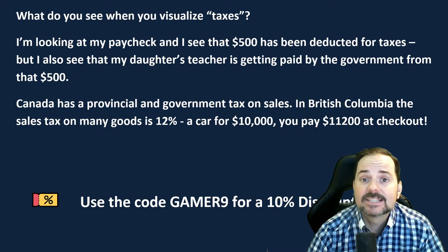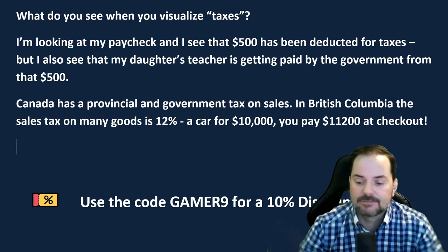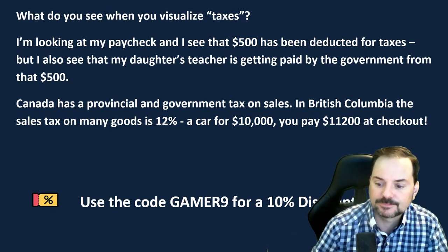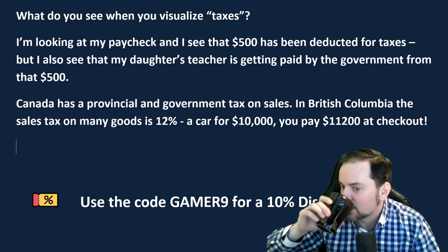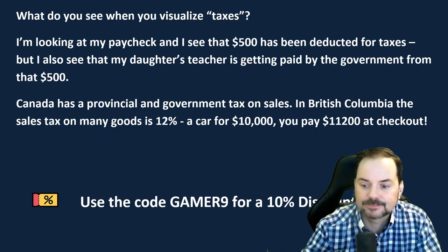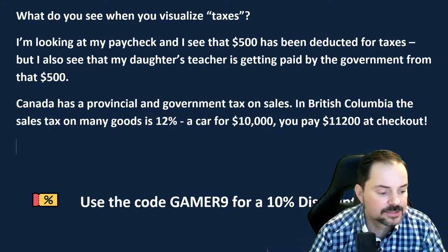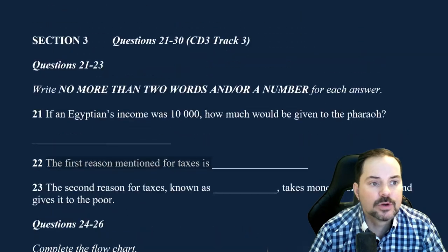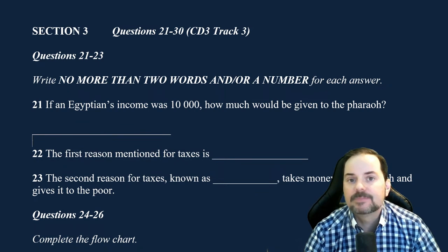So that's your visualization — visualize the topics, make them connected, connect yourself to them. Let's do some listening, everybody. We're going to listen and answer these questions and become part of it. So if the first question is: if an Egyptian's income was 10,000, how much would be given to the Pharaoh — become the Egyptian.